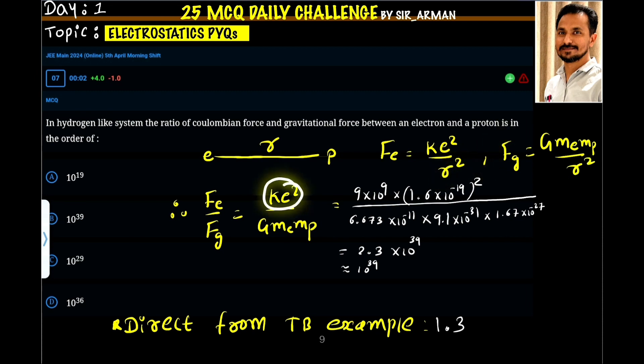So remaining with K e square by G M E M P where K is the Coulomb's constant, E is the charge of electron, capital G is the gravitational constant, universal constant, M E mass of electron, mass of proton.